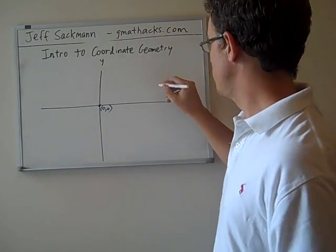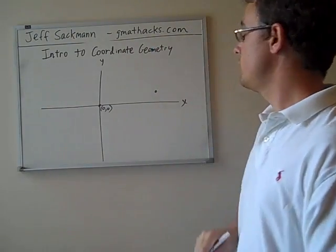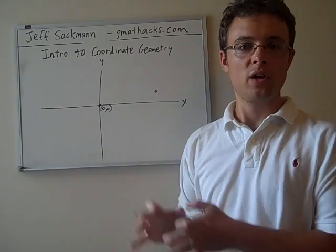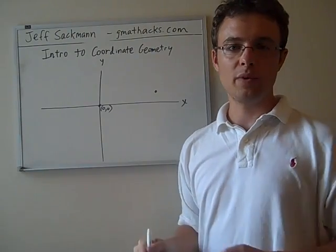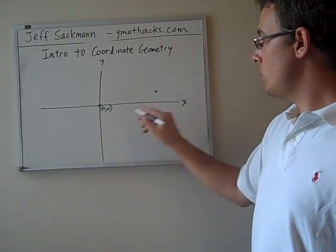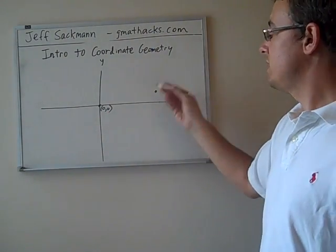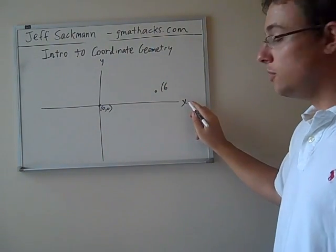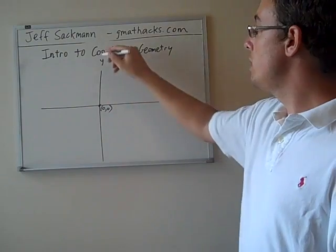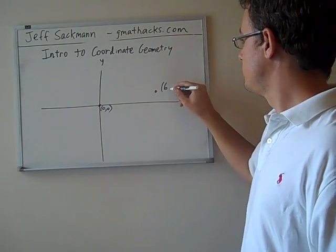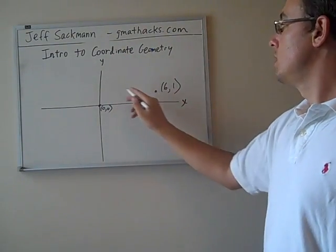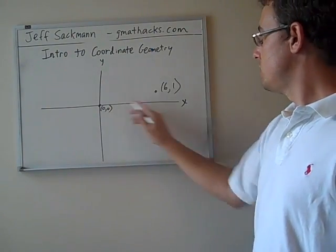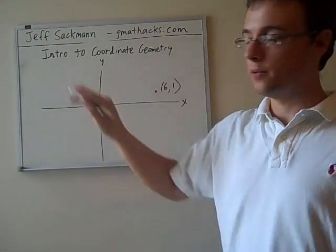Let's say we've got a point right over here — sometimes you might see hash marks on the lines. For today's purposes we're going to be doing some guesstimating. This point right here is about 6 over, which means the x-value is 6, and it's 1 up. So the x-coordinate is 6, the y-coordinate is 1.